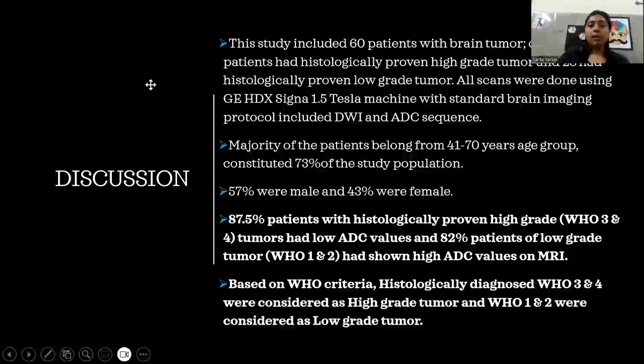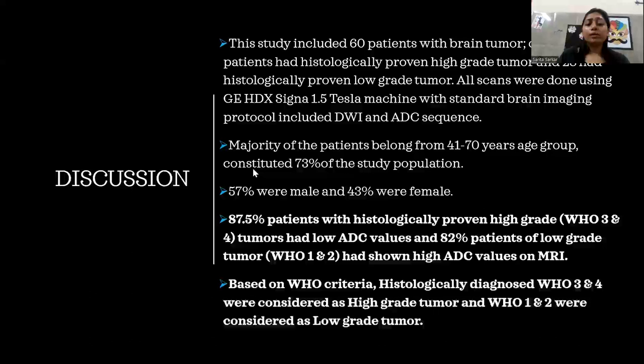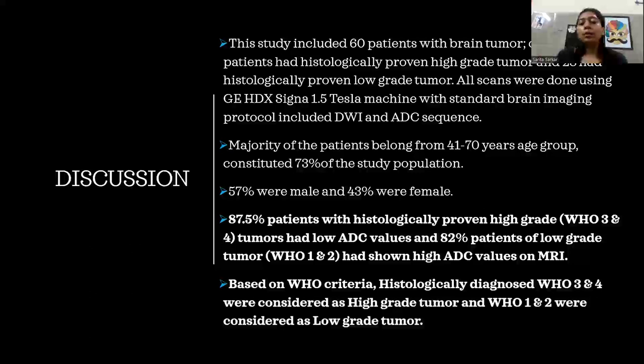Coming to the discussion: the study included 60 patients with brain tumor — 32 had histologically proven high-grade tumor and 28 had histologically proven low-grade tumor. The majority of patients belonged to the 41 to 70 years age group, constituting about 73% of the study population; 57% were male and 43% were female. 87% of patients with histologically proven high-grade tumors had low ADC, and 82% with low-grade tumors had high ADC values. WHO grades 3 and 4 were considered high-grade, and WHO grades 1 and 2 were considered low-grade.